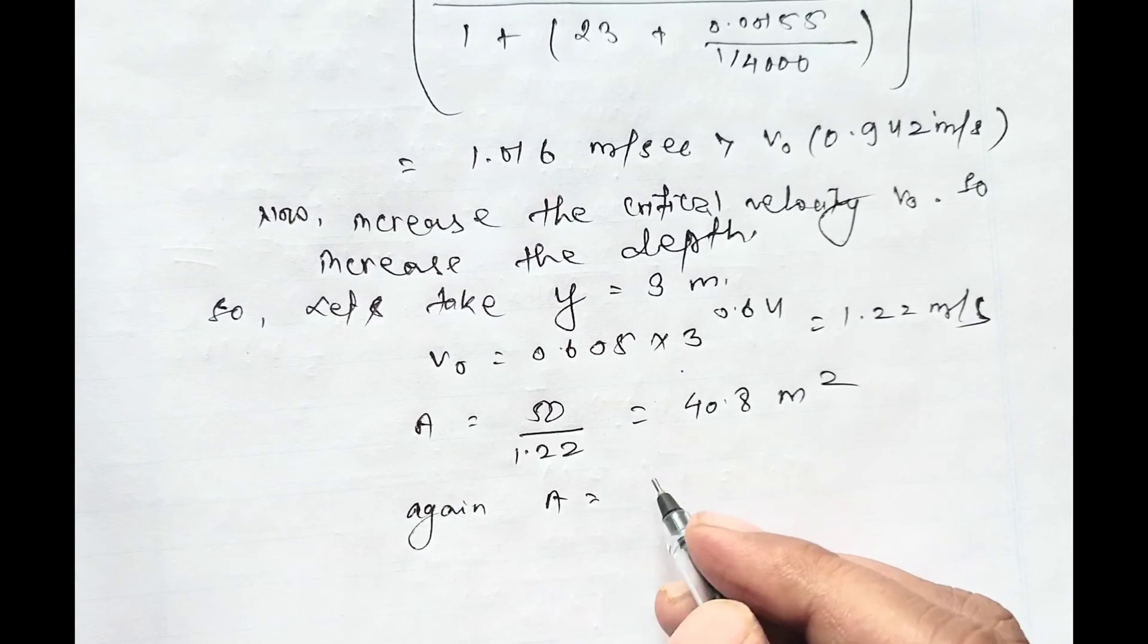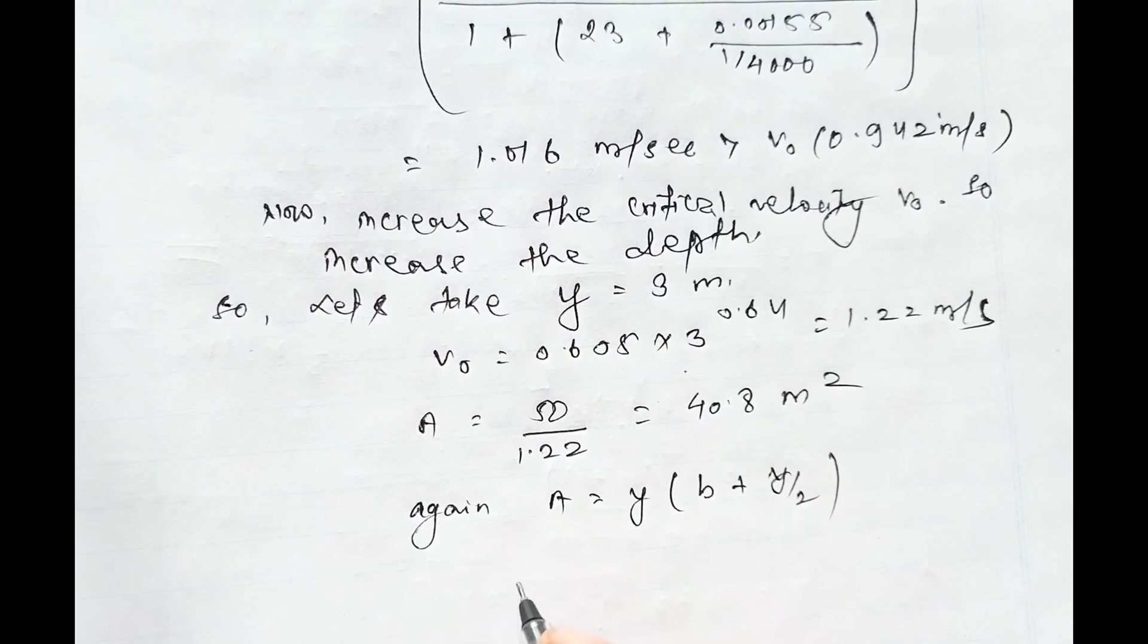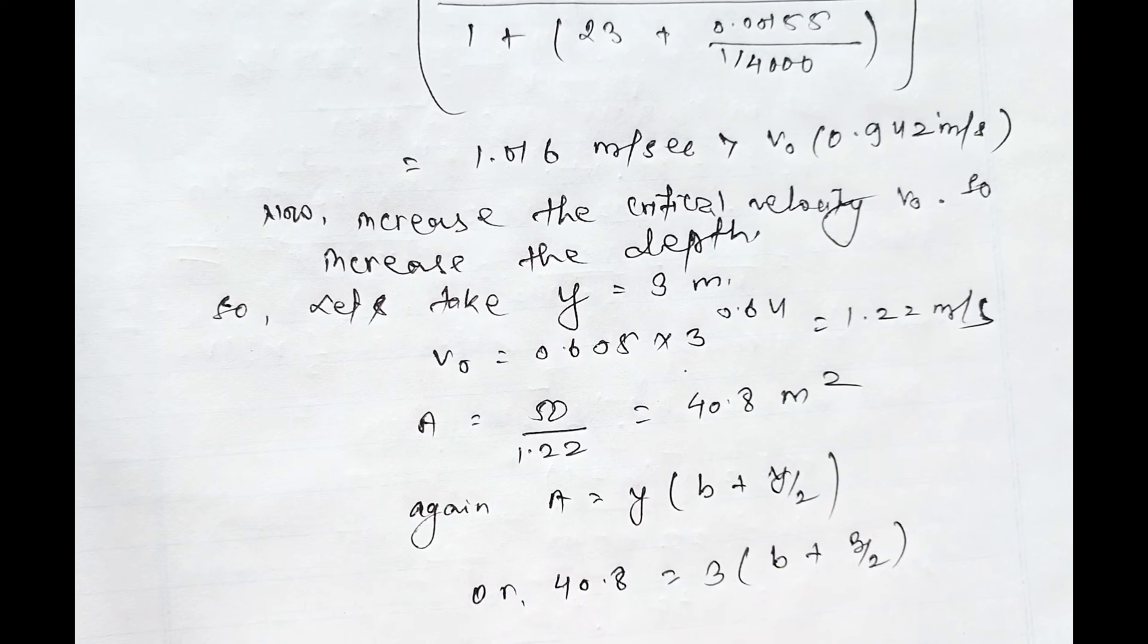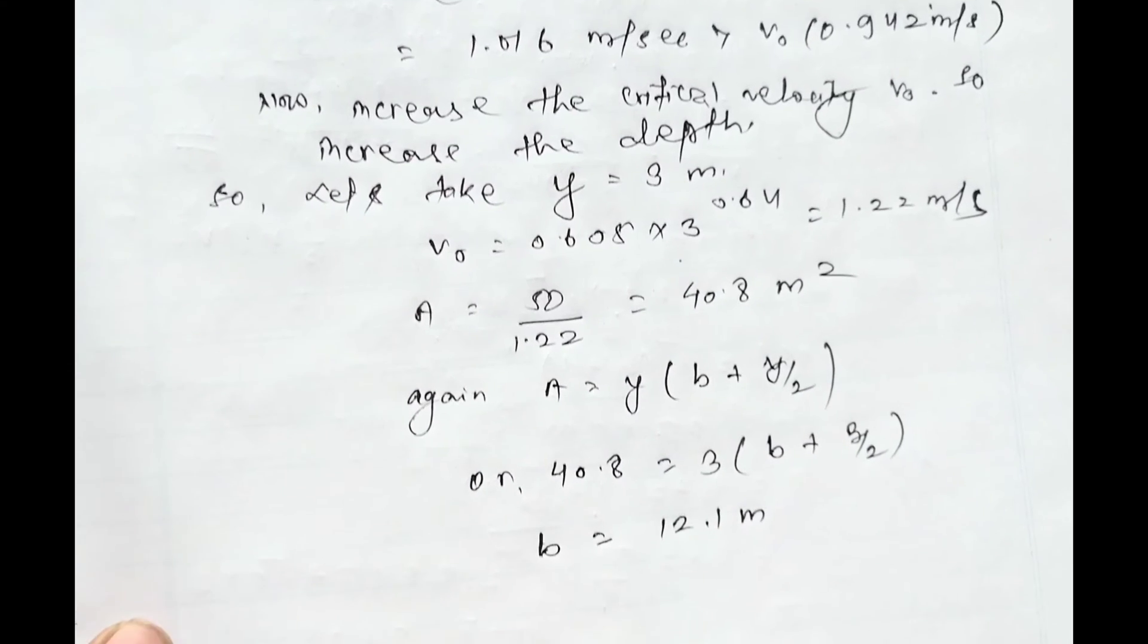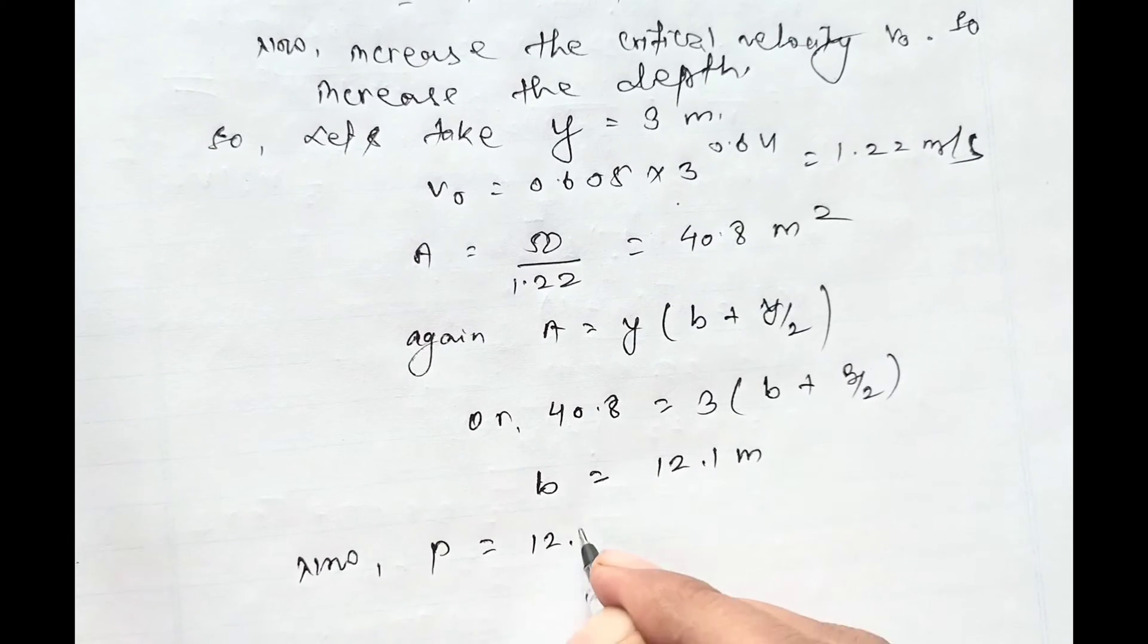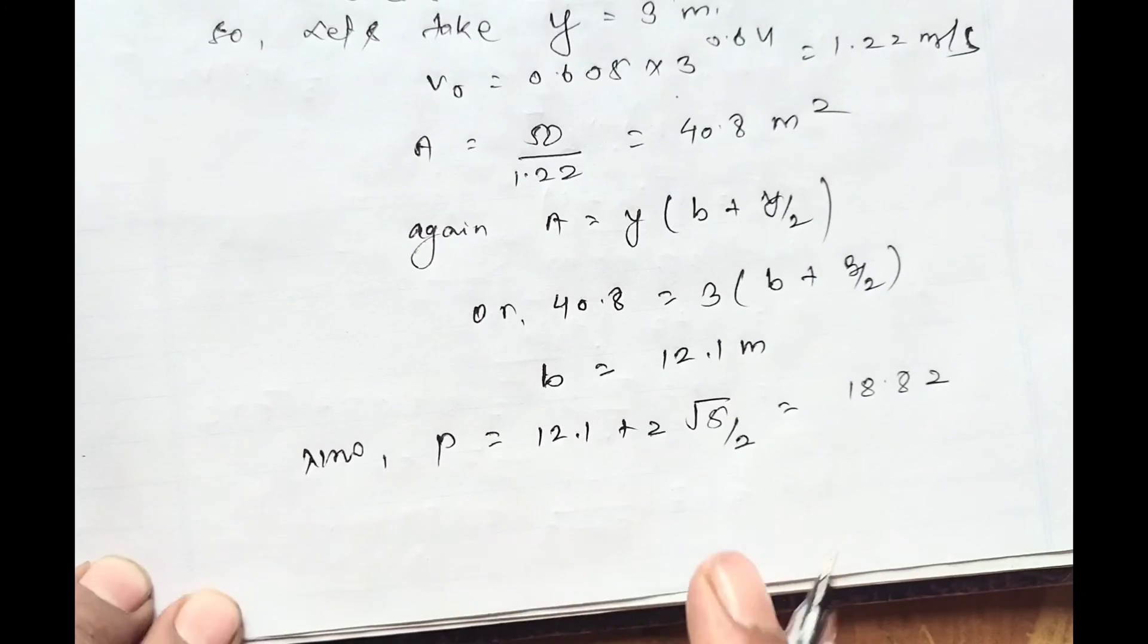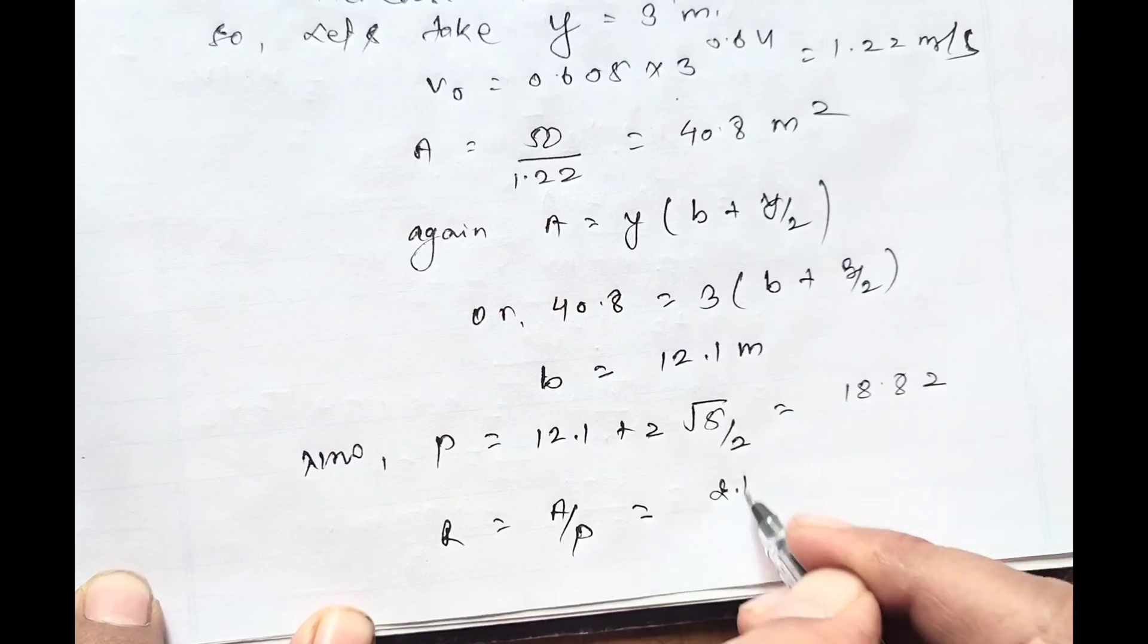A equals y times (B plus y by 2), so 40.8 equals 3(B plus 1.5). On solving this, the value of B will be 12.1 meter. Now P equals 12.1 plus 2√(5/2) equals 18.82, and hydraulic radius R equals A by P equals 2.17.